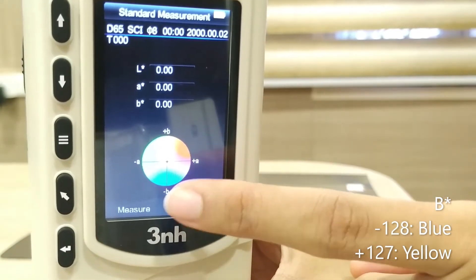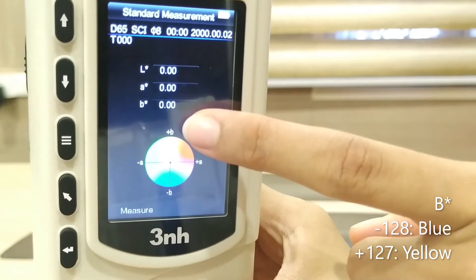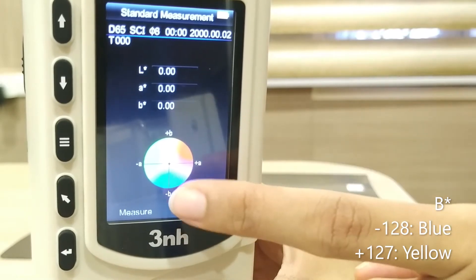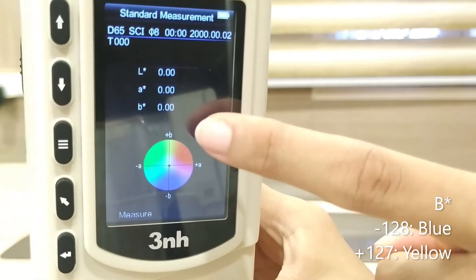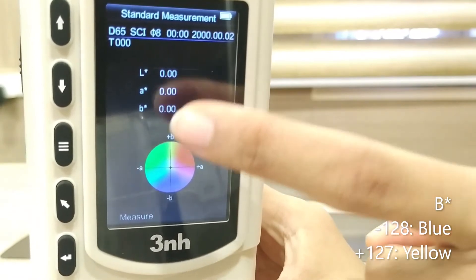The numerical range is from minus 128 to plus 128. This means that negative values indicate blue color and positive values indicate yellow color.